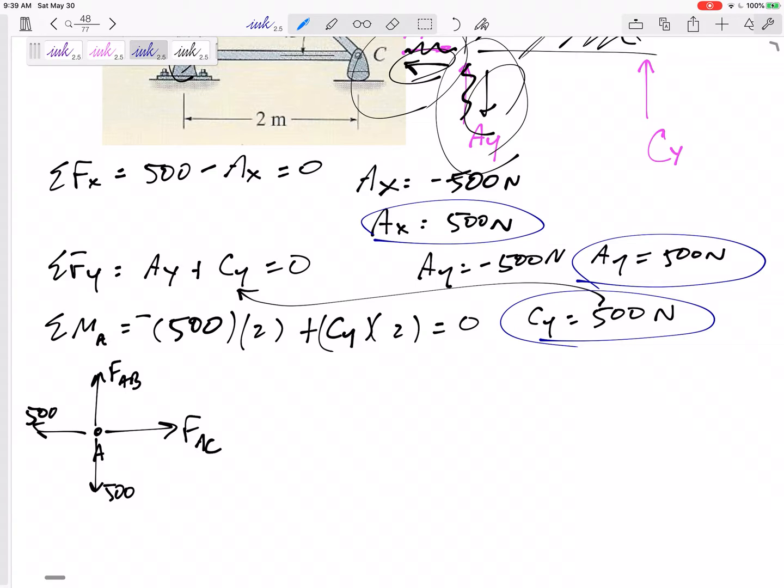And now you can sum the forces in the X direction. FAC minus 500 equals zero, FAC equals 500. You probably could have just kind of seen that from that free body diagram at that point. My answer came out positive, which means I guessed tension correctly, and so I'm going to say 500 newtons tension is the force in AC.